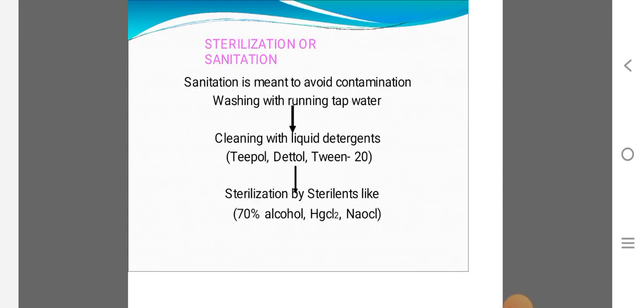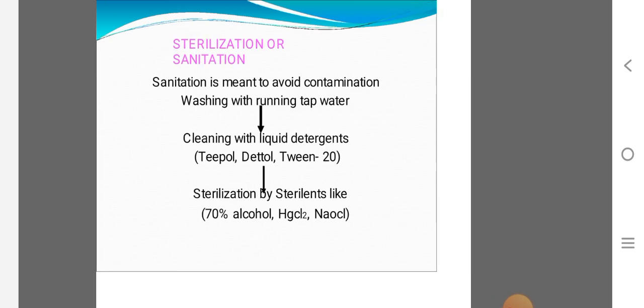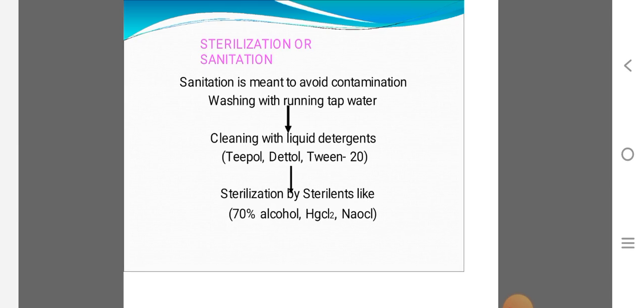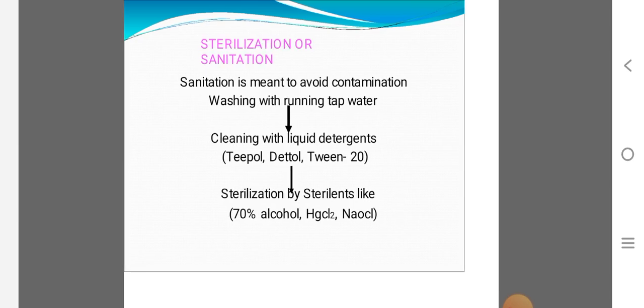We have to sterilize the explant or sanitize it. First we use running tap water. This is not sterilization, this is cleaning. Plants are external, in the environment, dust particles bind on the leaves. That's why we have to sterile.